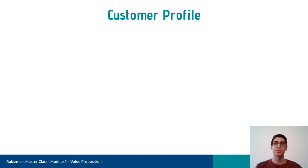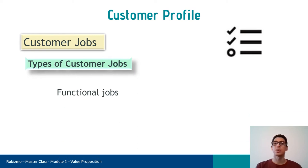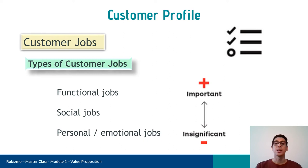Okay, I will start with the customer profile and its first block, customer jobs. Customer jobs is a task customers try to perform or complete, problems they try to solve, or needs they try to satisfy. We have different types of customer jobs. The first is functional jobs when our customers try to perform a specific task, such as eating healthy as a consumer. The next is social jobs when our customers want to be perceived by others, for example, be like a stylish consumer. And the last is emotional or personal jobs, for instance, achieve a sense of job security in the workplace. And it should be noted that all jobs don't have the same importance to our customers. Some are important and crucial and some are insignificant and customers don't care about.